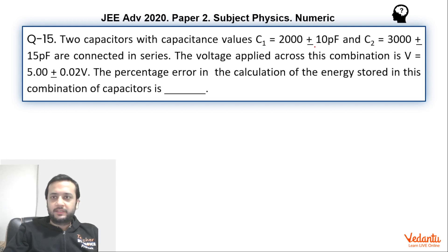There are two capacitors whose values have been given in form of error, and the potential difference that has been applied across the series combination of those two capacitors has also been given. We have to find the percentage error in the energy. So pretty simple question as I said.